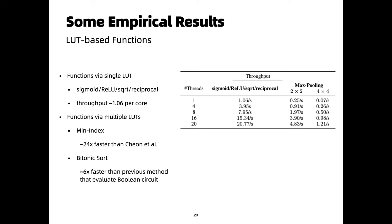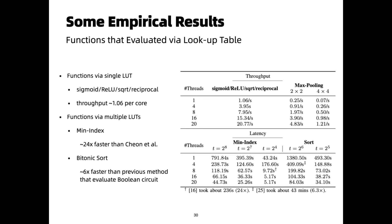Pointwise functions can be evaluated by one lookup table, such as sigmoid and square root. We benchmarked the throughput of these functions, which was about 1,000 per machine core. We also evaluate functions that consist of multiple lookup tables, including argmin and bitonic sort. To compare with previous methods, our argmin took about 10 seconds, which is about 24 times faster than Chimera's method. To sort 64 encrypted integers, it took about 7 minutes, which was about 6 times faster than the previous method that evaluates a Boolean circuit homomorphically.